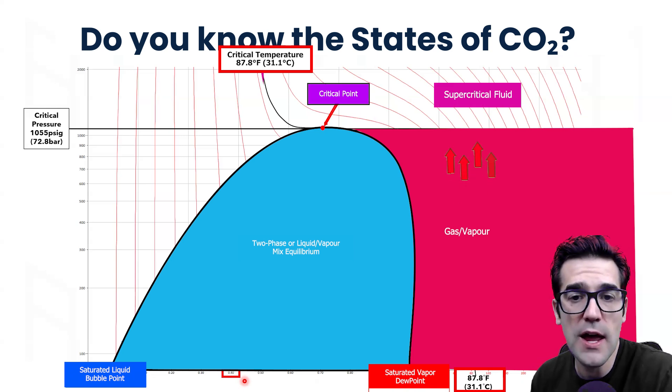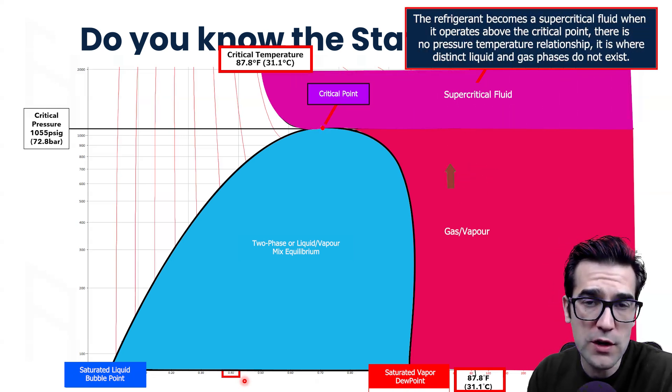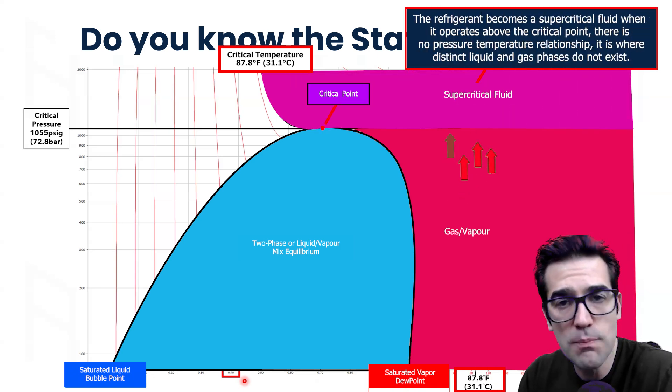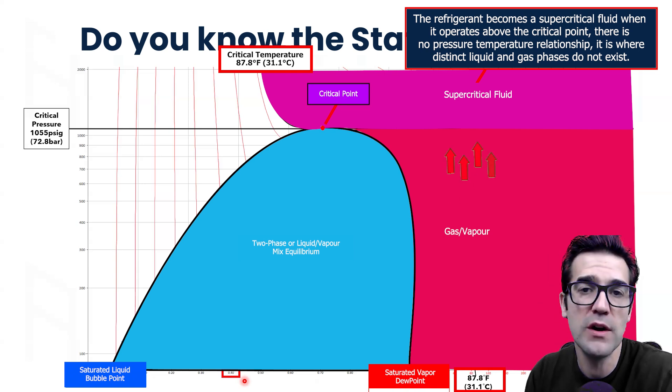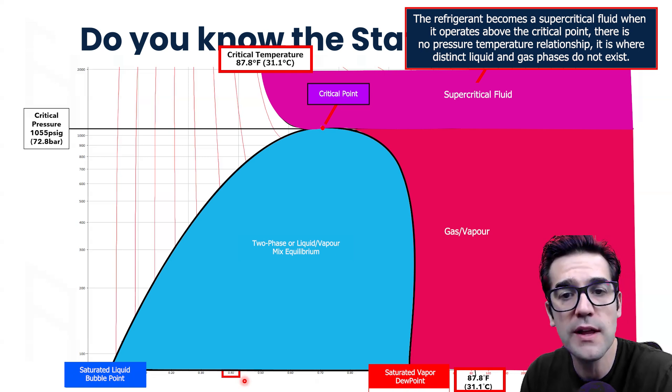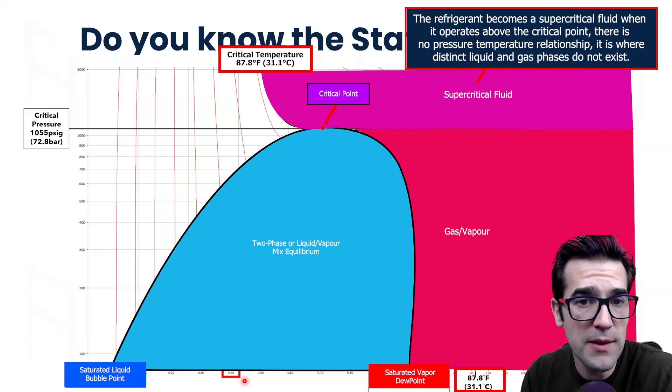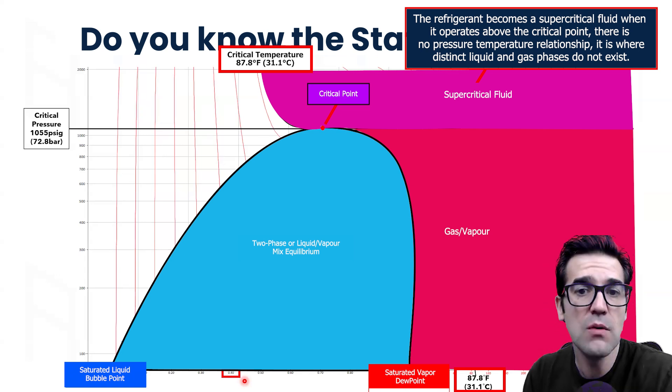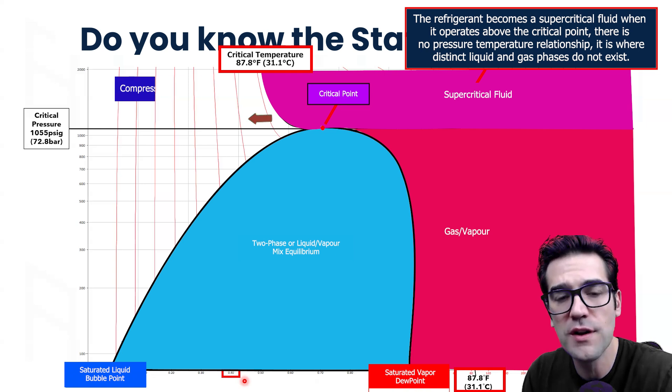From there, when we climb all the way up over the critical point, we are a supercritical fluid. This is where the transcritical nature comes from when we get into the transcritical cycle, because now we're running our system all the way up into a zone above the critical point, above the critical pressure, above the critical temperature. Now, we're a supercritical fluid.